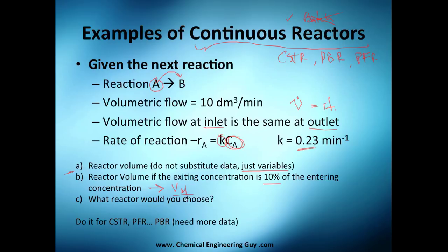And then they tell you what reactor would you choose. So we're going to do it for CSTR, continuous stirred tank reactor, and plug flow reactor. PBR, no. Why not? Because we will need more data, more about the mass of reactor, about the constant or the rate of reaction. We will need this prima.